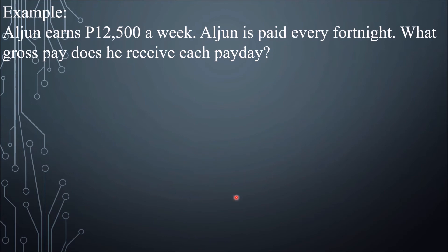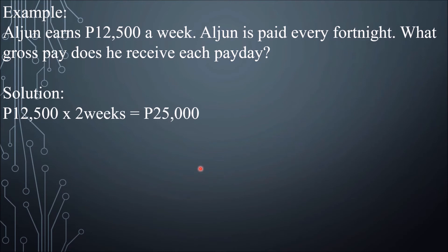Next example: Aljun earns 12,500 pesos a week and is paid every fortnight, or every two weeks. What gross pay does he receive each payday? Solution: 12,500 pesos per week × 2 weeks = 25,000 pesos received each payday.